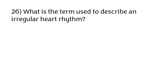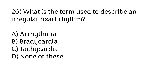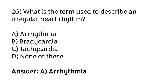What is the term used to describe an irregular heart rhythm? Options: arrhythmia, bradycardia, tachycardia, none of these. The correct answer is option A — arrhythmia is the term used to describe an irregular heart rhythm.